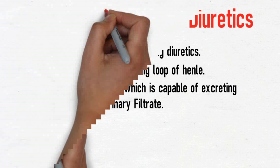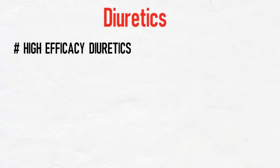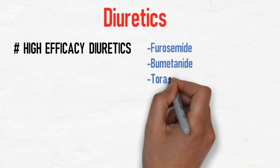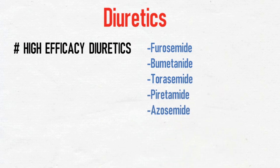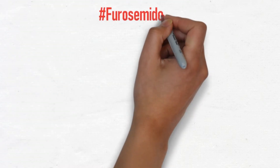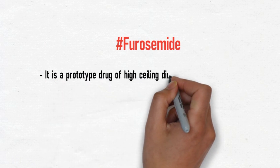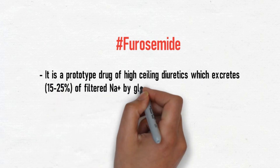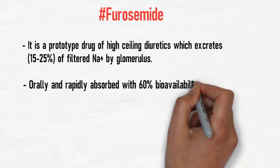The drugs under high efficacy diuretics are furosemide, bumetanide, torsemide, ethacrynic acid, and azosemide. Furosemide is the prototype drug of high ceiling diuretics, which excretes 15 to 25 percent of sodium filtered by the glomerulus.